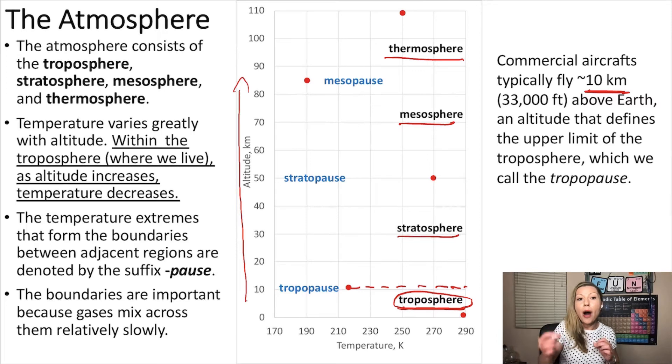The tropopause is a part of the atmosphere that represents a temperature extreme boundary dividing the troposphere from the stratosphere. In the troposphere, as we go higher, the temperature decreases to about 220 Kelvin, around 10 kilometers above the Earth.